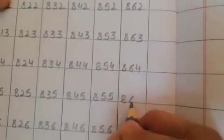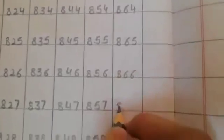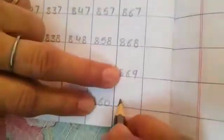What comes after 860? 861, 862, 863, 864, 865, 866, 867, 868, 869. Then what comes after 870?